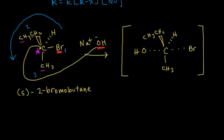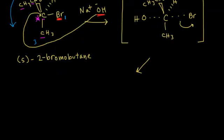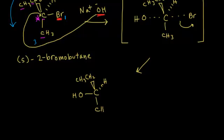The bond between the OH and the carbon is forming at the same time the bromine is leaving. When the bromine finally leaves and those electrons kick onto the bromine, the OH ends up on the left side. So our carbon is bonded to OH on the left side. We keep the ethyl group as a wedge, the hydrogen as a dash, and the methyl group as a straight line in the plane of the page.